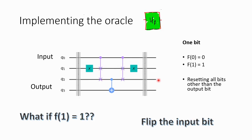So that is the one-bit implementation for f(0) = 1. What if f(1) = 1? What if our oracle stores the gold at location 1? If that is the case, the implementation is almost exactly the same. The only difference is that for qubit q0 we don't put the X gate — we flip the input bit. Everything else is similar.